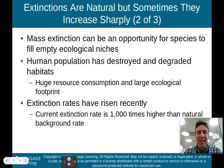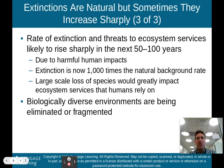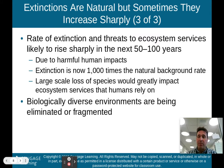Human population has destroyed and degraded habitats — that's another reason we are seeing these mass extinctions — because of our huge resource consumption and large ecological footprint. Extinction rates have risen recently. The current extinction rate is 1,000 times higher than the natural background rate, and rates of extinction and threats to ecosystem services are likely to continue rising sharply in the next 50 to 100 years due to harmful human impacts.